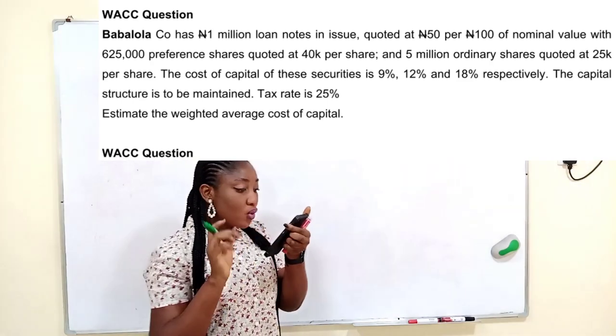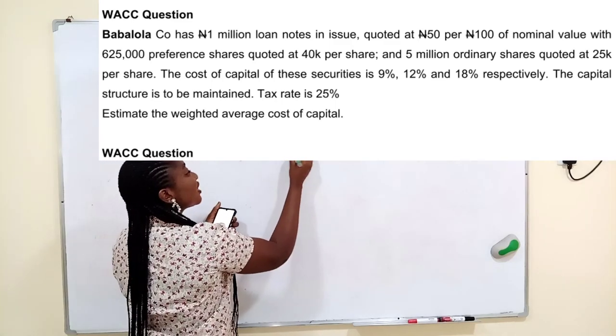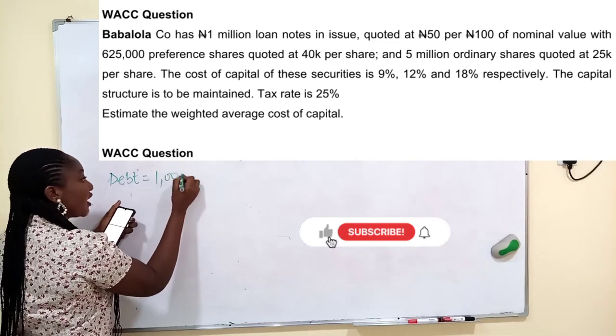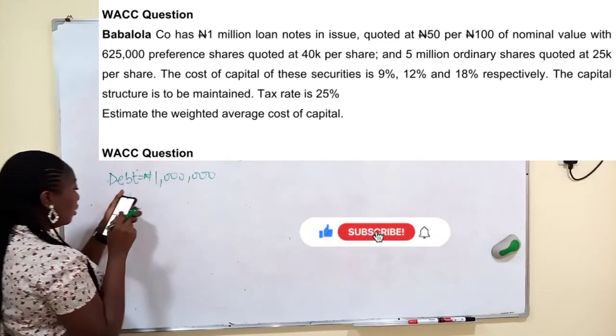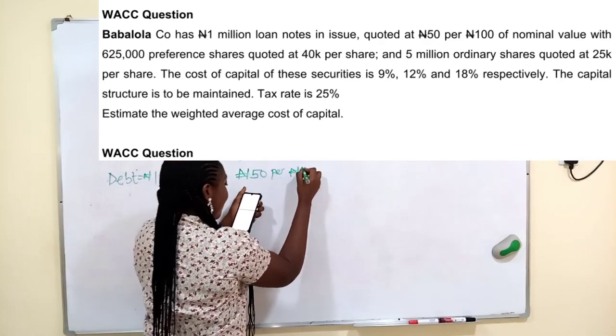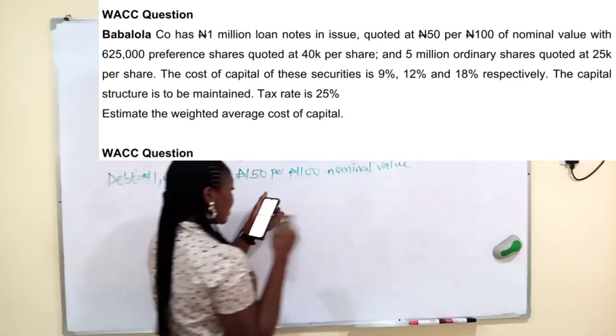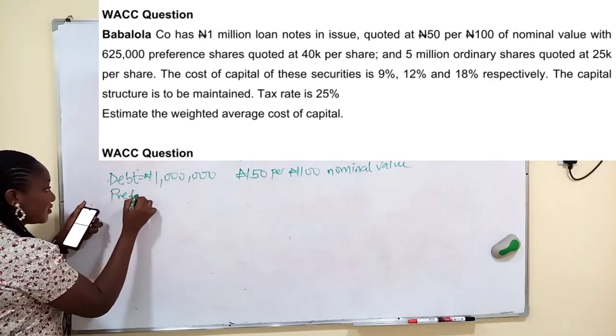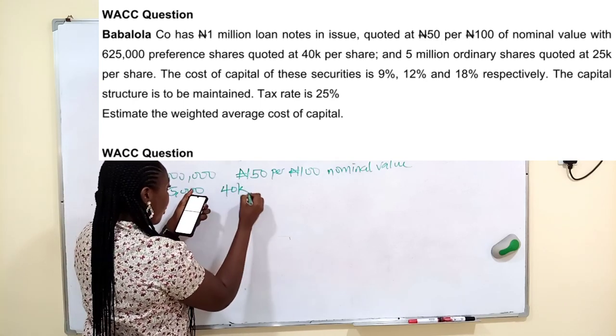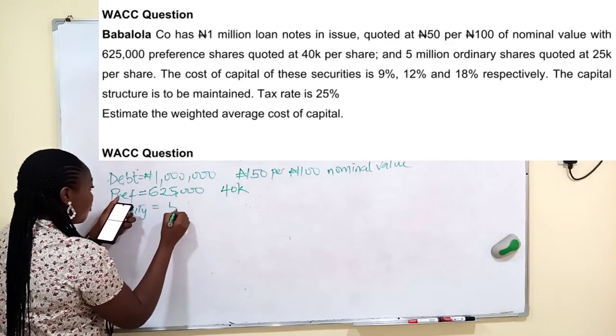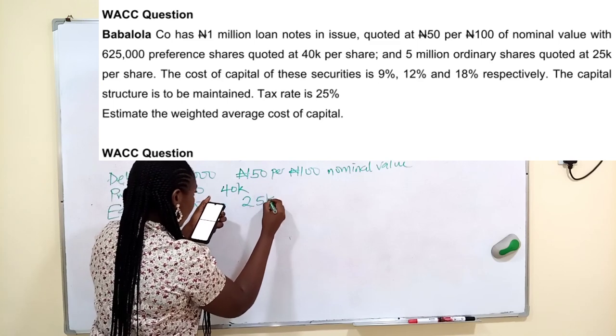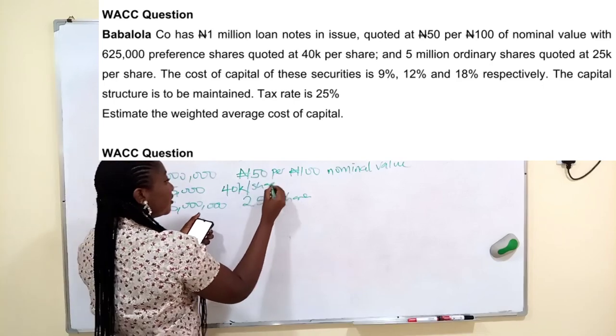This question says Babalola Co has 1 million Naira loan notes in issue, quoted at 50 Naira per 100 Naira nominal value. They also have 625,000 preference shares quoted at 40 kobo per share, and 5 million ordinary shares quoted at 25 kobo per share.